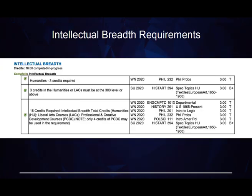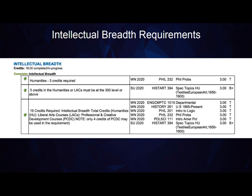Your intellectual breadth requirement is made up of at least 16 total credits of Liberal Arts courses, commonly referred to as LACs. To learn more about courses that qualify as LACs, we encourage you to review the definition in the Engineering Bulletin on the Core Requirements page. Within those 16 credits, you are required to complete at least three credits of Humanities and at least three credits of a 300-level or higher LAC course. Some students are able to satisfy these specific requirements with just one class. You are also able to complete up to four credits of Professional or Creative Development courses, also known as PCDC, but PCDC courses are optional.